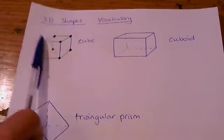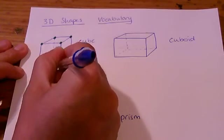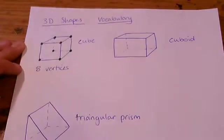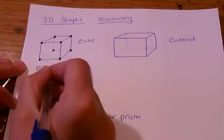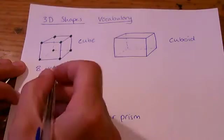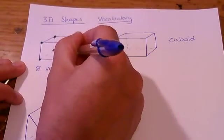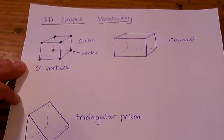1, 2, 3, 4, 5, 6, 7, 8. So we say there are 8 vertices. Vertices is a word which means more than one vertex, so it's a plural. Each of these is called a vertex, and together there are 8 vertices.